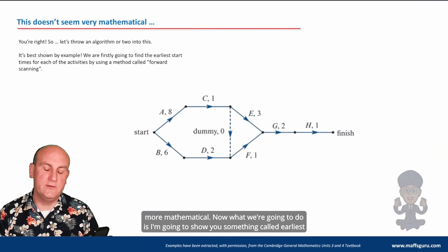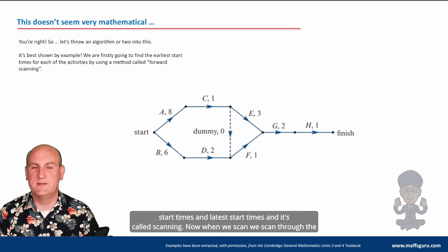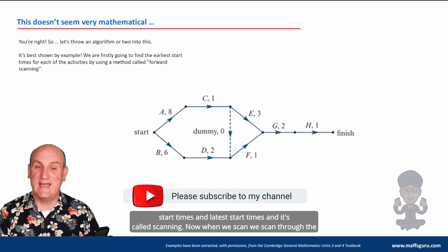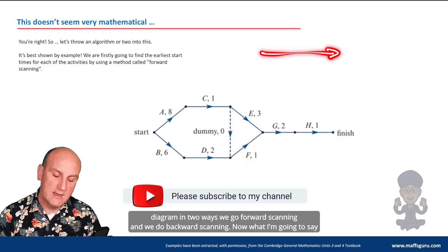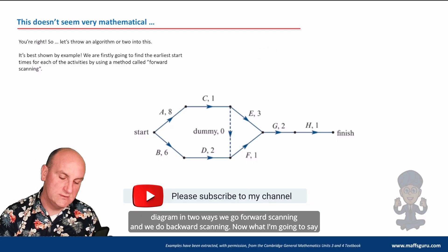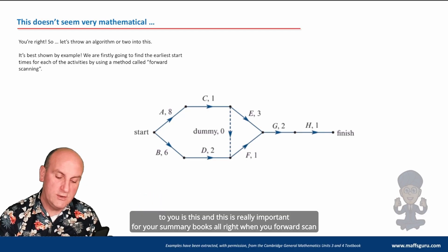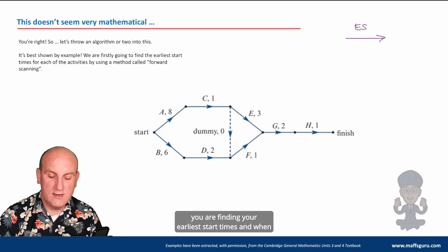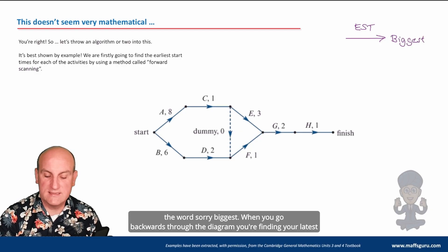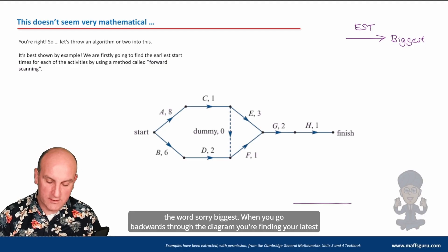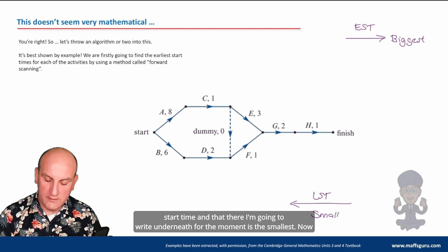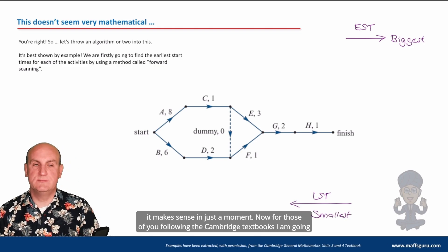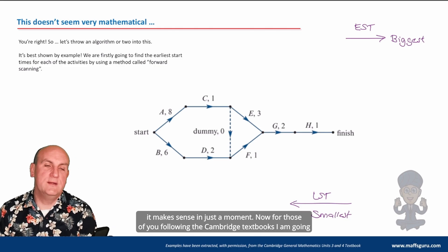This is called scanning. We scan through the diagram in two ways: forward scanning and backwards scanning. When you forward scan you are finding your earliest start times, and you take the biggest value when there's a choice. When you go backwards through the diagram you're finding your latest start time, and you take the smallest. It makes sense in just a moment.